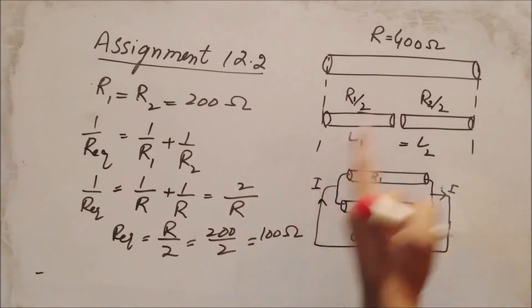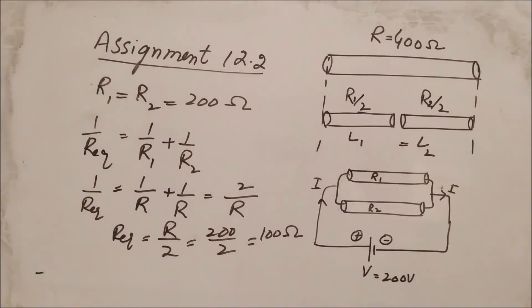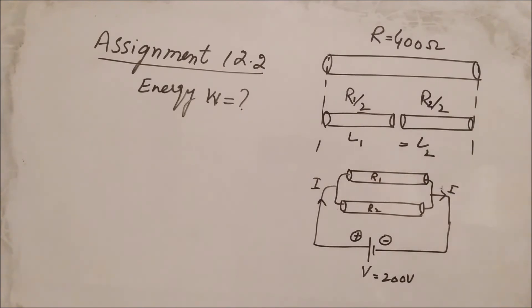This is the equivalent resistance for the circuit with two wires connected in parallel. Now we need to find energy, so we use Joule's law.